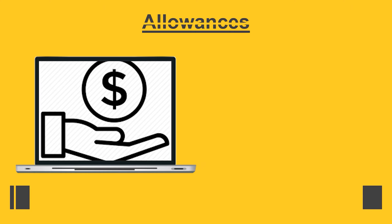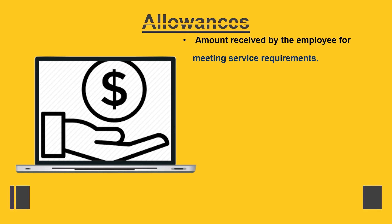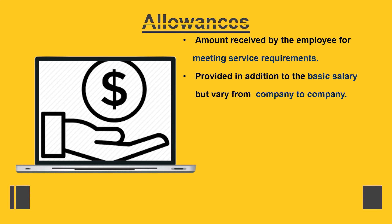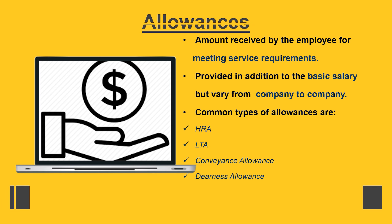Component number four: allowances. This is the amount received by the employee for meeting service-related requirements. It is provided in addition to the basic salary but varies from company to company and even industry to industry. There are four types of allowances: number one, HRA; number two, LTA (leave travel allowance); number three, conveyance allowance; and number four, dearness allowance.